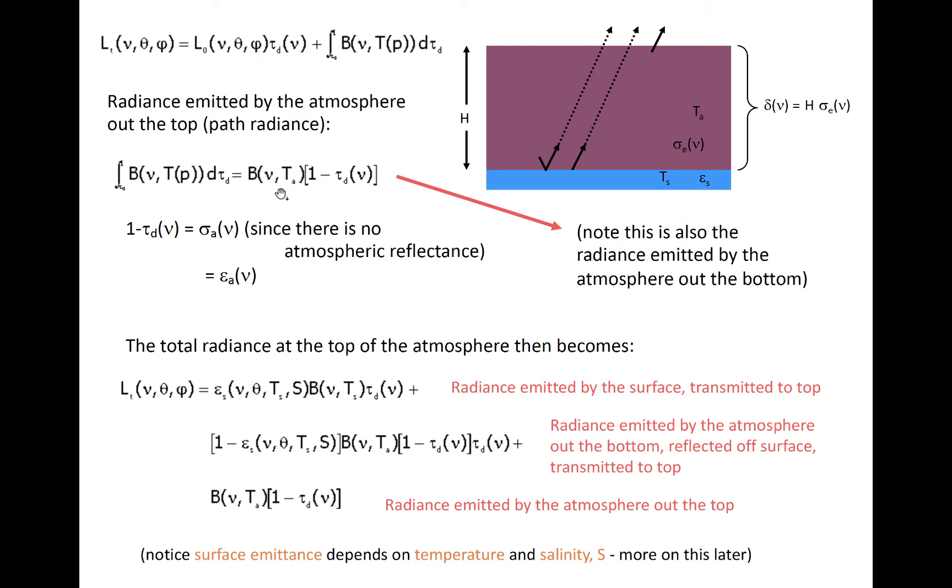This b times 1 minus tau also represents the downward emission of microwave radiation by the atmosphere that may later be reflected off the surface and back to space. We can then express the top of atmosphere radiance as a function of Planck radiance, as follows here at the bottom.